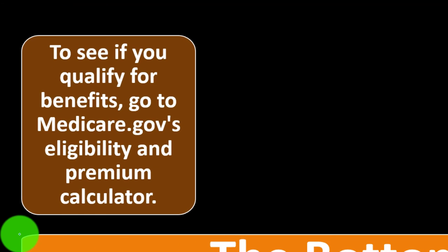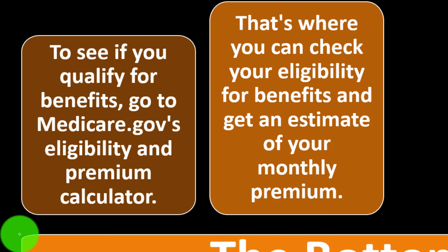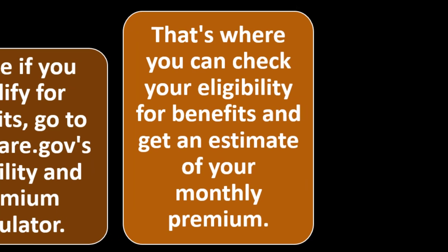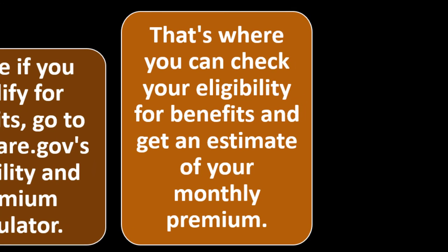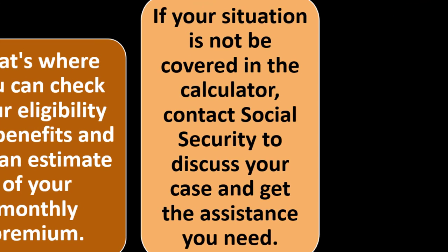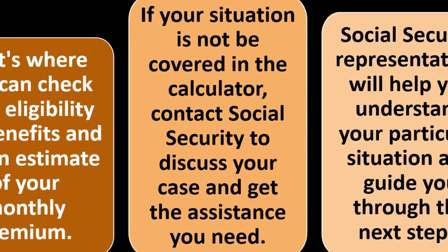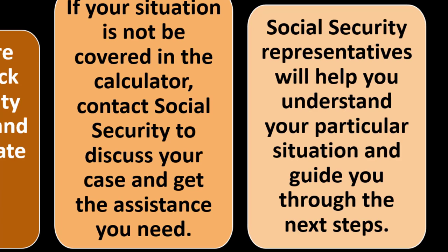The bottom line: to see if you qualify for Medicare benefits, go to the Medicare.gov eligibility and premium calculator, where you can check your eligibility and get an estimate of your monthly premium. If your situation isn't covered by the calculator, contact Social Security to discuss your case. Social Security representatives will help you understand your particular situation and guide you through the next steps.